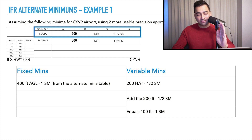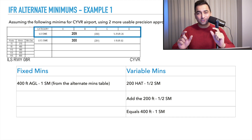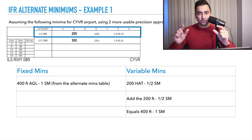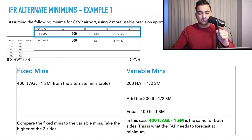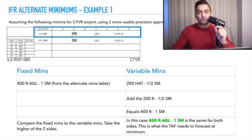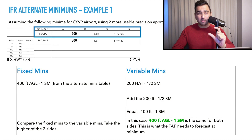We compare the fixed minimums to the variable minimums to determine which one is higher. When we compare the two sides, we'll see that in this case they're both the same. So as long as the TAF shows 400 feet AGL and one statute mile at the bare minimum, you can use this airport for your alternate.